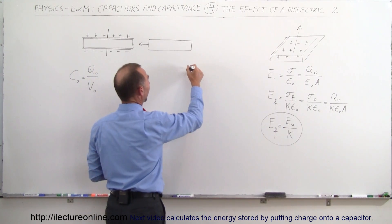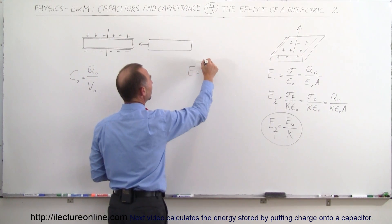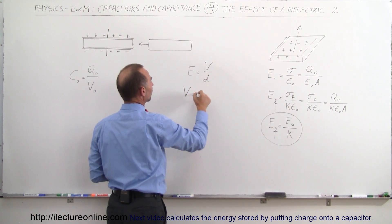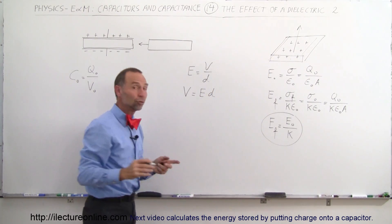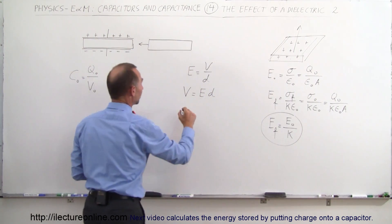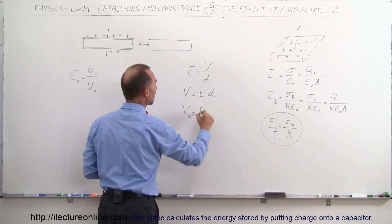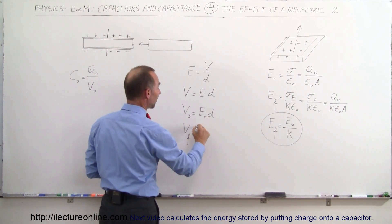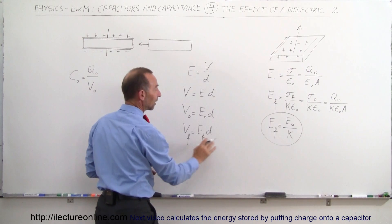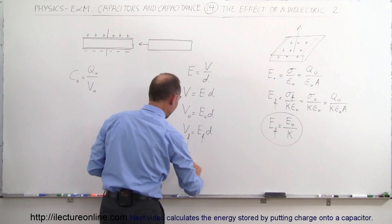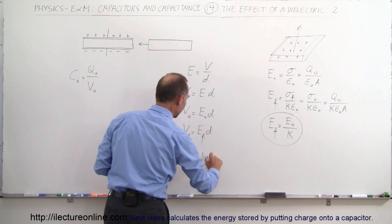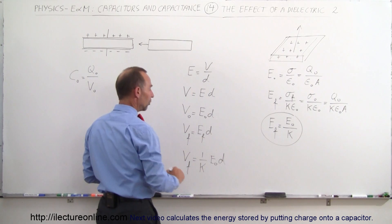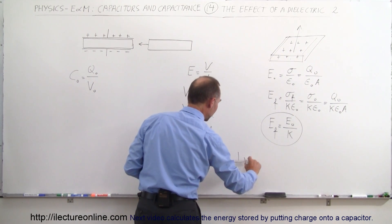We also know that E can be defined as the change in potential divided by the distance, or the potential difference equals E times d. Initially, V₀ = E₀·d. The final potential difference V_final = E_final·d, and since E_final = E₀/k, we get V_final = (1/k)·E₀·d, which equals (1/k) times the original voltage V₀.